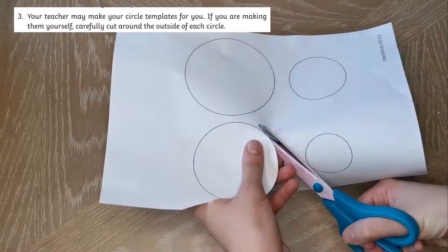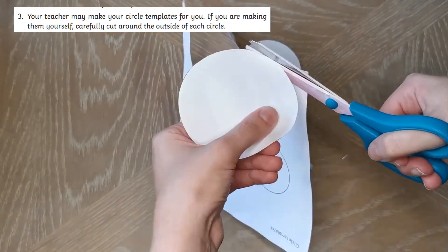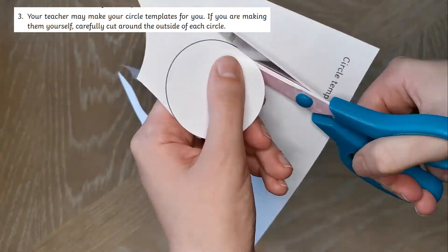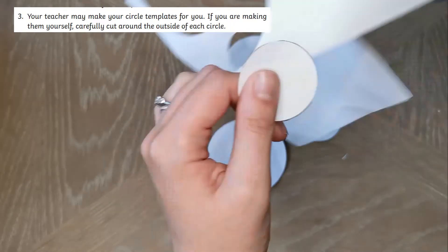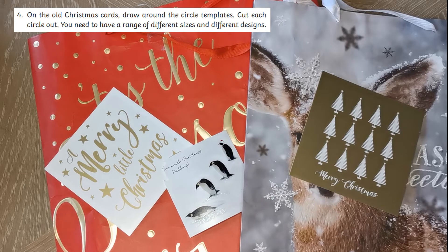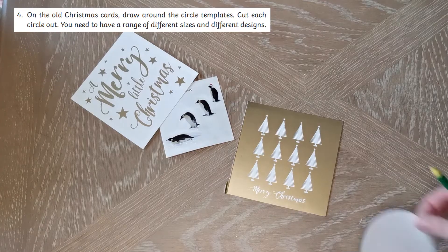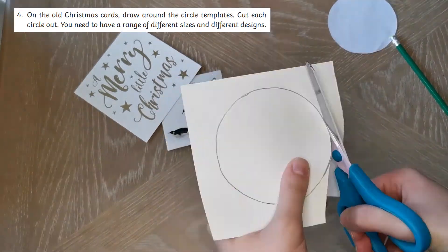Cut carefully around the outside of each circle. On the old Christmas cards, draw around the circle templates. Cut each circle out. You need to have a range of different sizes and different designs. This also works well for old wrapping paper and Christmas gift bags.